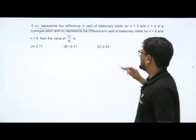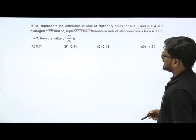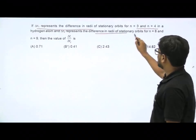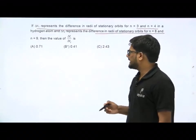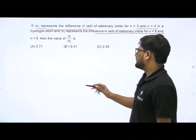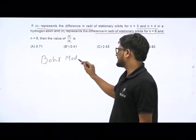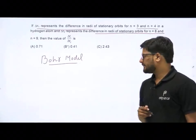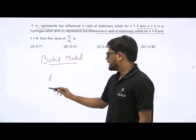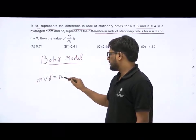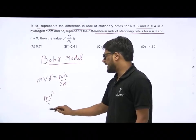Next problem: delta_r1 represents the difference in radii of stationary orbits for n = 3 and n = 4 in a hydrogen atom, and delta_r2 is the difference for n = 8 and n = 9. Find delta_r1/delta_r2. In Bohr's model, angular momentum mvr = nH/2π and centripetal force equals electrostatic force. Solving gives radius proportional to n².